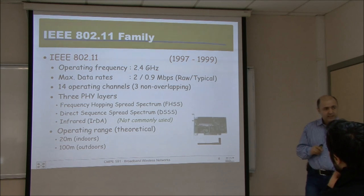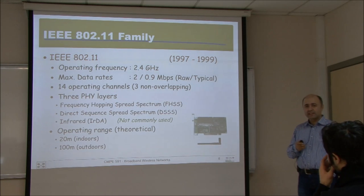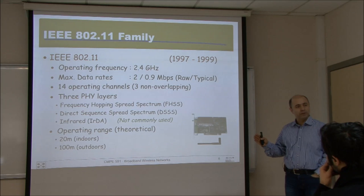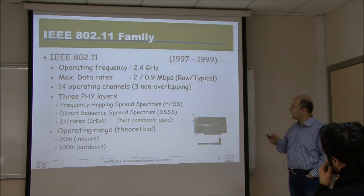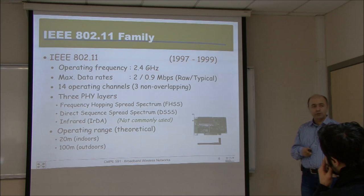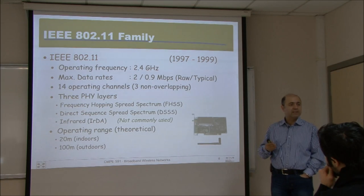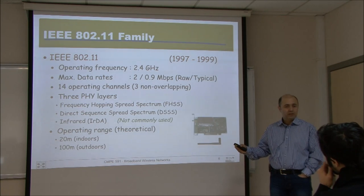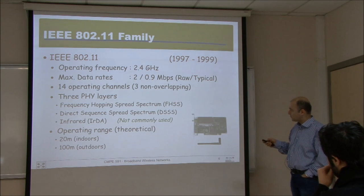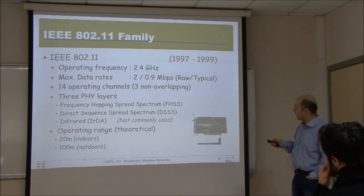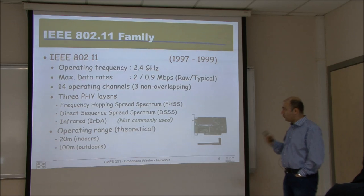Let's look at these in a little more detail. It's important to understand how fast the technology has developed and where we came from. 802.11 was as early as 1997, working at the 2.4 GHz unlicensed band — that's very important, because if a better technology is not in an unlicensed band, it will be very costly for subscribers and won't get widely deployed. The maximum raw data rate is 2 Mbps.